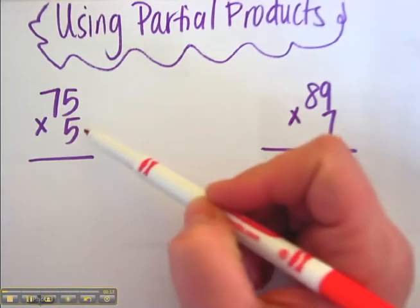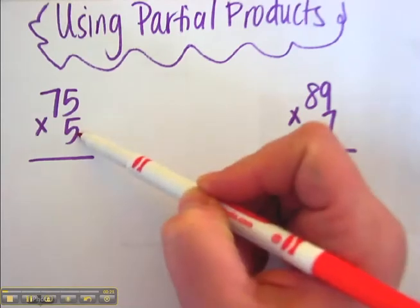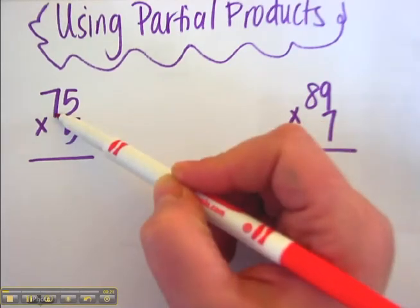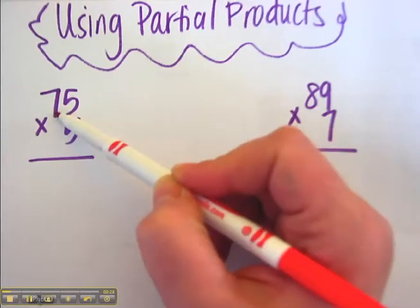First let's look at the problem 75 times 5. Now we're going to look at the 5 and then we're going to go to the highest place value which in this case would be the tens place and we're going to say 5, that 7 means 70s.